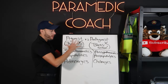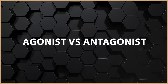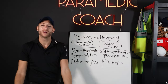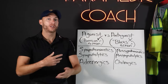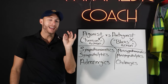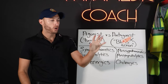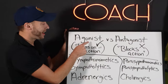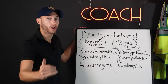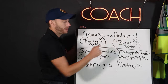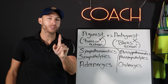Now, agonist versus antagonist. An agonist is any drug that turns on a receptor. Let's say a receptor, when turned on, causes vasoconstriction — that drug is an agonist. An antagonist is a blocker — it enters that receptor and blocks the action.